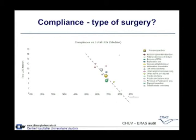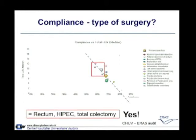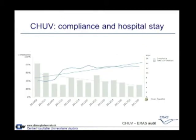On the other hand, are there differences by type of surgery? Yes — you see lower compliance for several operations. We may have exaggerated a bit by including HIPEC in the ERAS program. HIPEC is pretty tough: a 10-hour operation with chemotherapy and hypothermia, so it's not easy. Total colectomy also brings results down. The type of surgery is more important than the age of the patient.